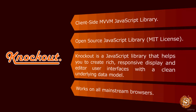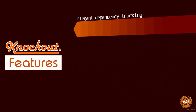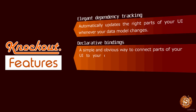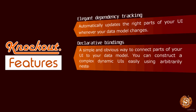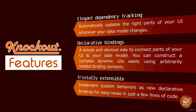Some of the cool features of Knockout.js are elegant dependency tracking — that is, automatically updating the right parts of your UI whenever your data model changes — and declarative bindings, a simple and obvious way to connect parts of your UI to your data model. You can construct a complex dynamic UI easily using arbitrarily nested binding contexts. It's also trivially extensible: implement custom behaviors as new declarative bindings for easy reuse in just a few lines of code.